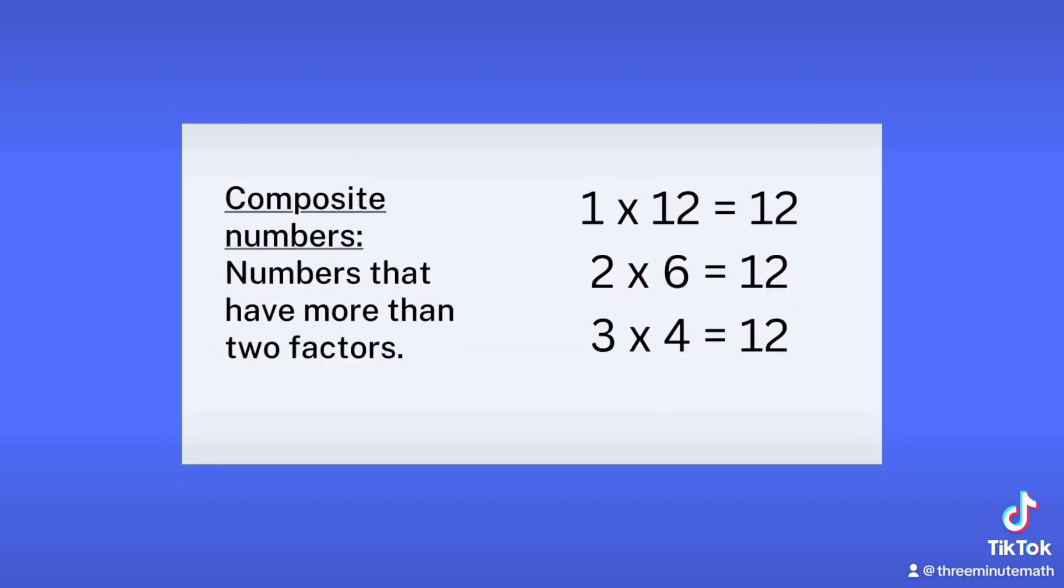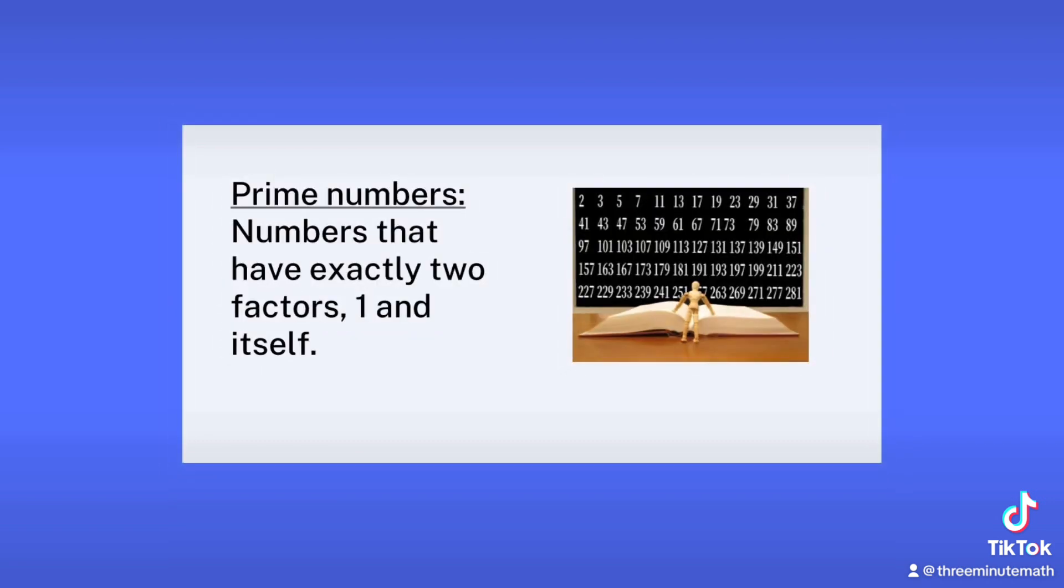A composite number is a number that has more than two factors, while a prime number has exactly two factors: one and itself.